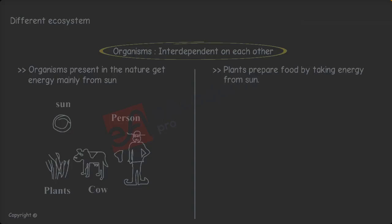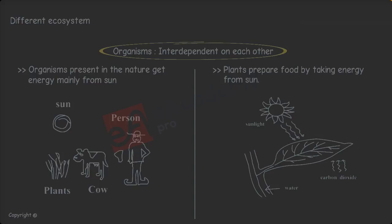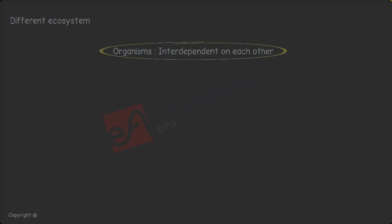Without sunlight, can plants prepare their own food? No. Even CO2 plays a very important role in the food preparation for plants. So all abiotic factors are very essential for the plants as well as animals.